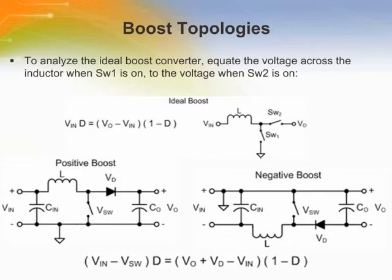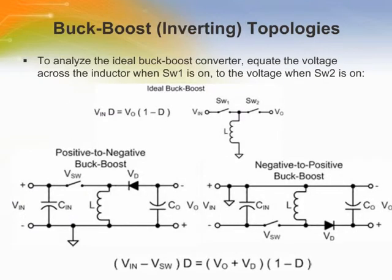The negative boost is mirrored from the positive boost. Note that the diode points in the direction of positive current flow at the output. For a practical boost converter, this topology is used when a voltage step-up conversion is needed.